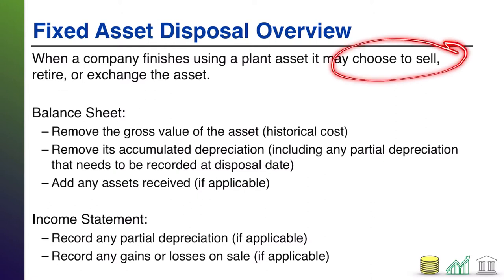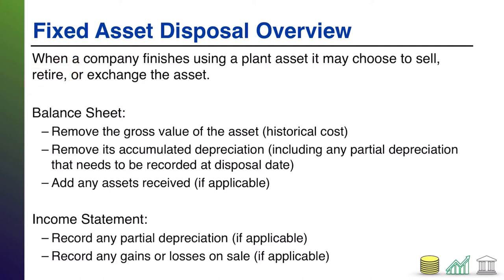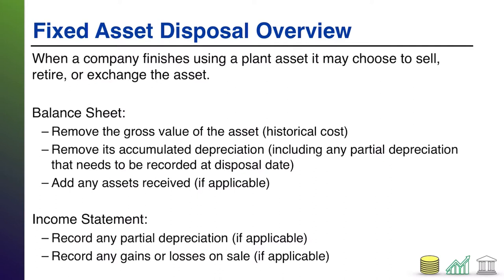When you sell an asset, that simply means you're getting rid of it but you're getting something in return, typically cash. When you retire an asset, that is when you are getting rid of it and you're not getting anything in return — think of this as throwing the asset away. When you exchange the asset, that's when you're kind of upgrading in a way, so to speak. You give up the asset, maybe putting it as value toward getting something else, possibly combined with a little cash outflow. That's really a version of selling because you're selling that asset as value toward another purchase, essentially.